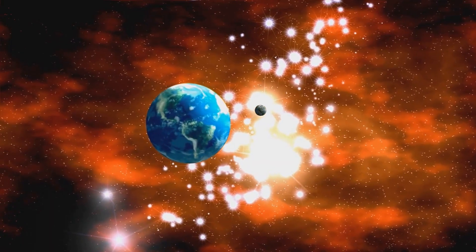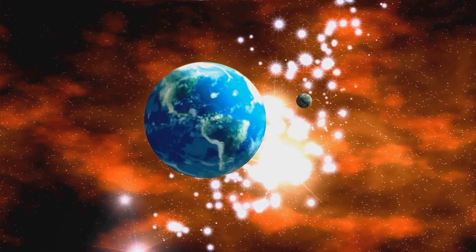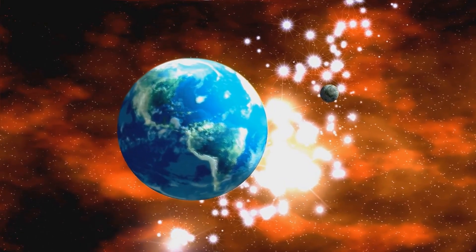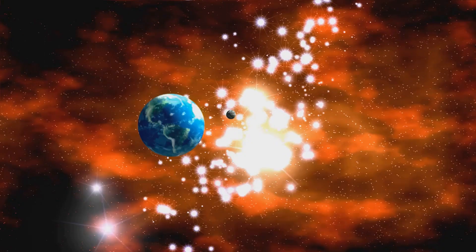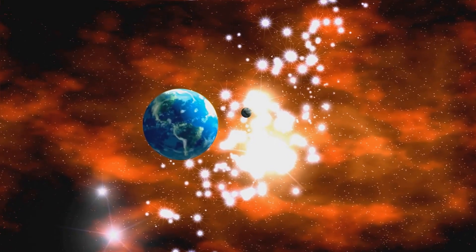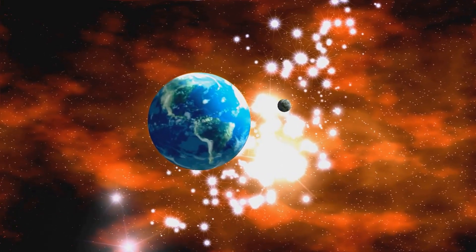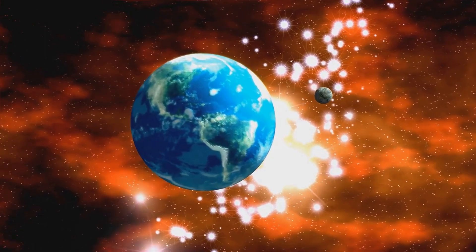As the universe expanded and cooled, matter began to clump together under the force of gravity, forming the first stars and galaxies. These celestial objects are the ancestors of the complex structures we observe in the night sky today.